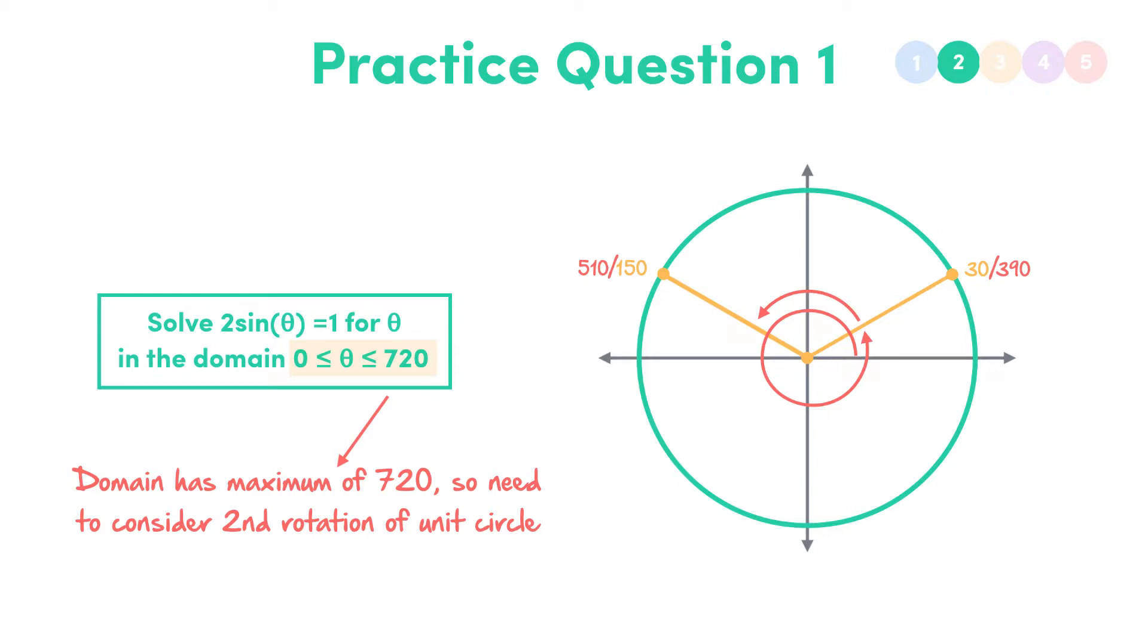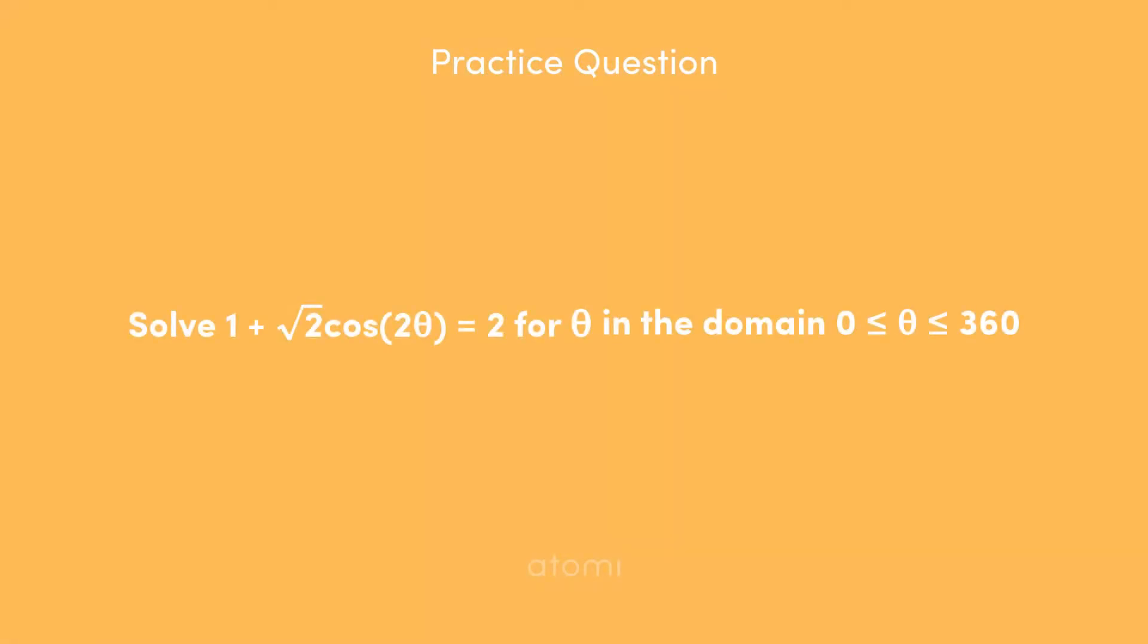Now let's move on to the second type of question you might get asked. This one's a bit trickier. Solve 1 plus root 2 cos 2 theta is equal to 2, for theta in the domain 0 less than theta less than 360.